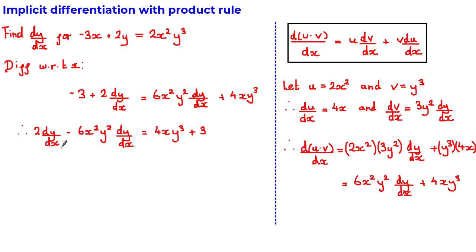2 dy by dx minus 6x squared y squared dy by dx is equal to 4xy cubed plus 3. On the left hand side, we have dy by dx in both terms, and therefore we can factorise to get dy by dx multiplied by 2 minus 6x squared y squared is equal to 4xy cubed plus 3.